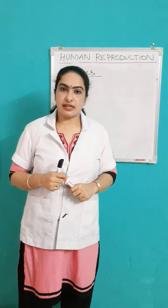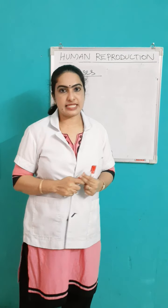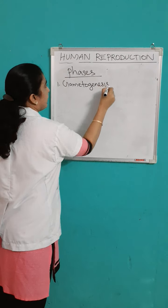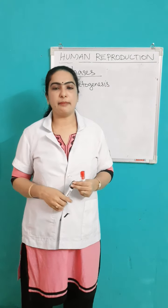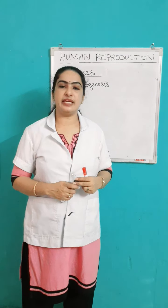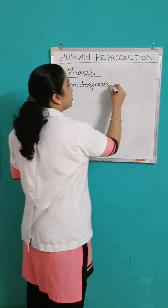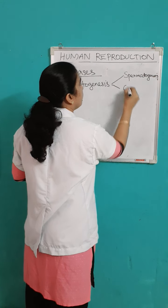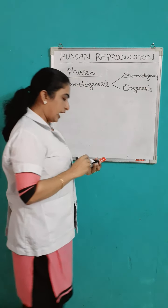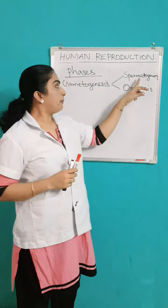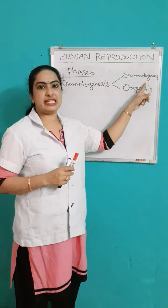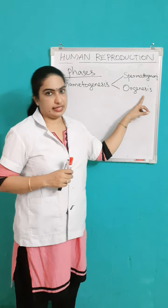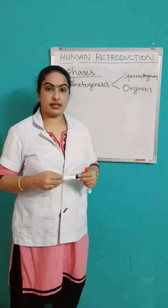The reproductive phases are: the first one is gametogenesis. Gametogenesis means the process of formation of gametes. In case of human beings, there are two types of gametogenesis: spermatogenesis and oogenesis. In spermatogenesis, there is a formation of male gametes such as sperm. In oogenesis, that is the formation of female gametes such as ovum.